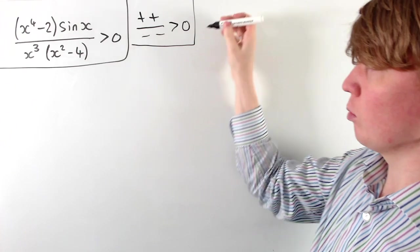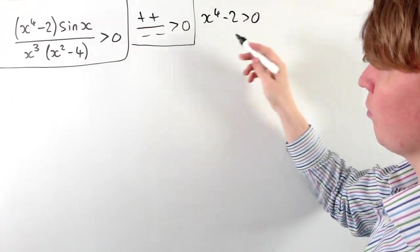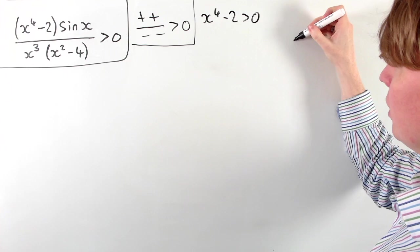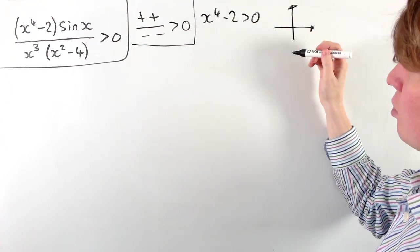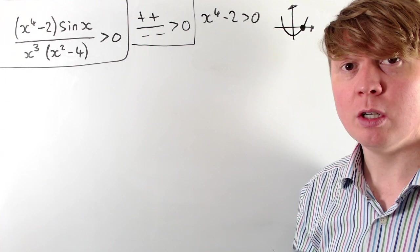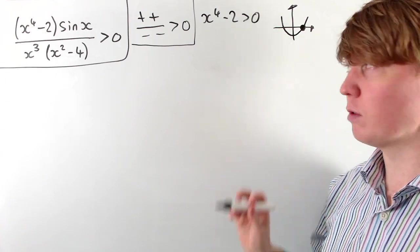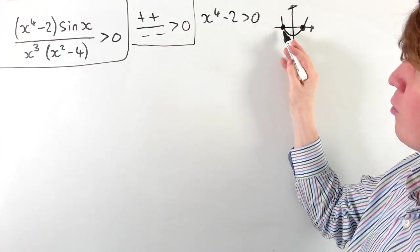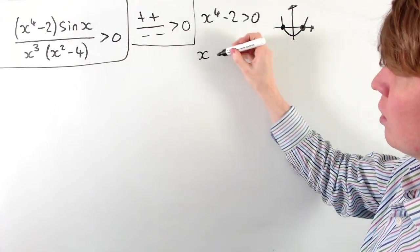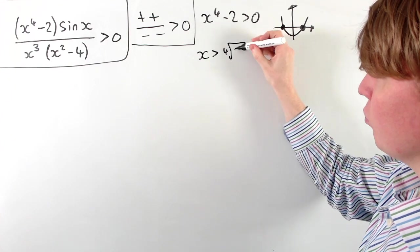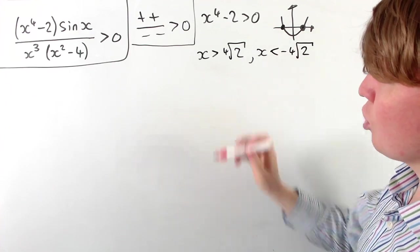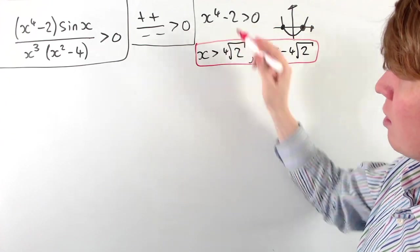Let's look at the first term: x to the four minus two. When is this positive — when is it greater than zero? This is equivalent to x to the four being greater than two. We can draw a graph of y equals x to the four minus two, and it's positive when x to the four is greater than two. This gives us x is greater than the fourth root of two on the right, and x is less than the negative of the fourth root of two on the left. These are exactly when this first term is positive.